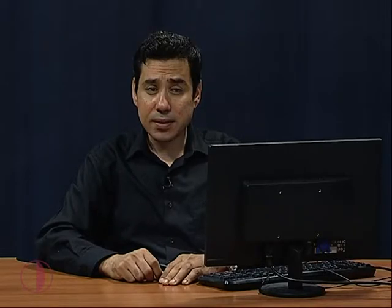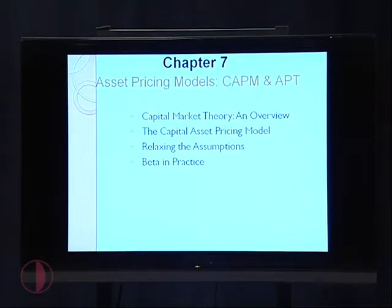Hello, today we are going to continue our subjects in this course and today we will explain the capital asset pricing model. Last lecture we explained portfolio — if the investor will invest in more than one asset to reduce the risk, that is called diversification. Today we will continue how we can reduce the risk by portfolio, then how we can determine the expected rate of return. Our topic today is the capital asset pricing model. We need to understand capital market theory, the capital asset pricing model, and the main assumptions for CAPM, and how we can measure the risk for systematic risk, which is measured by beta.